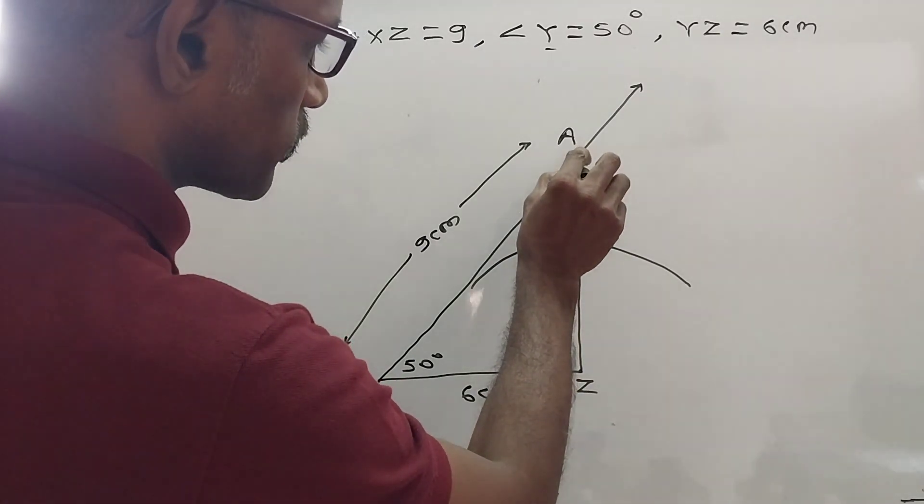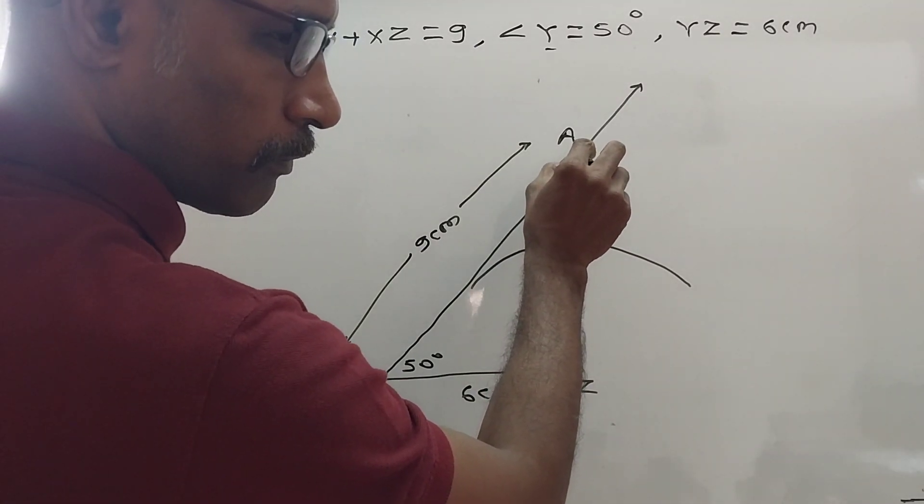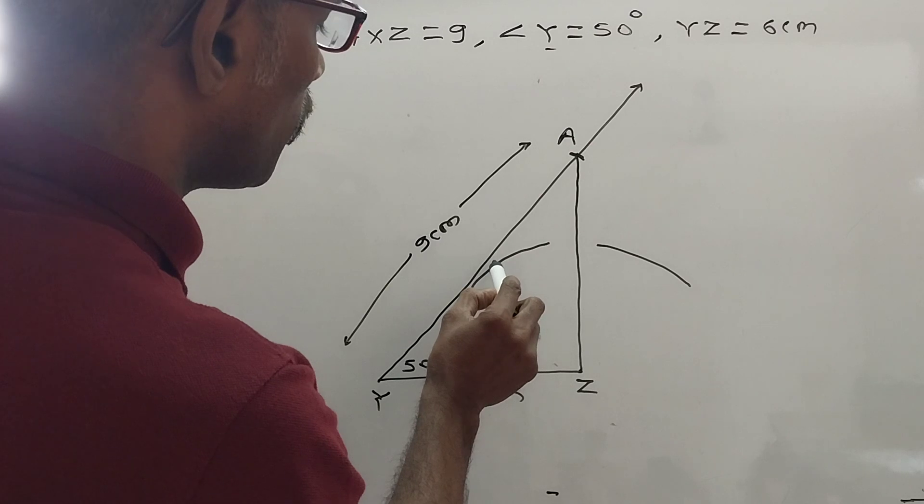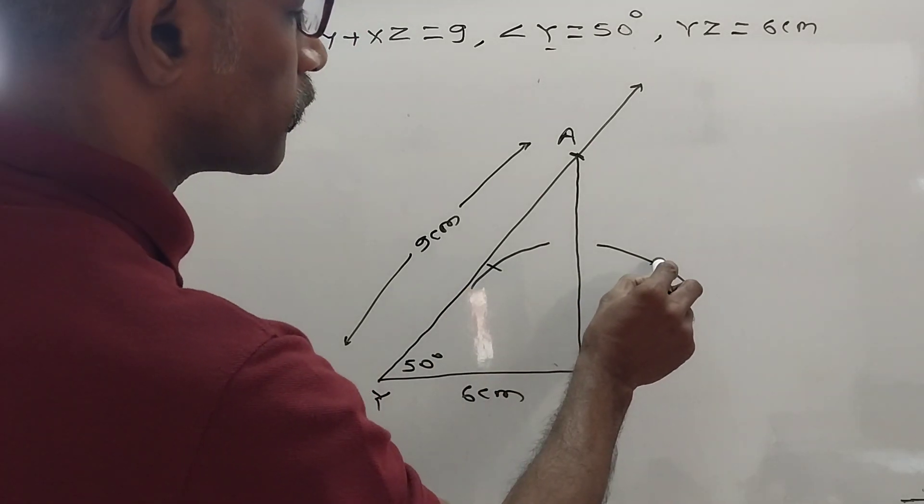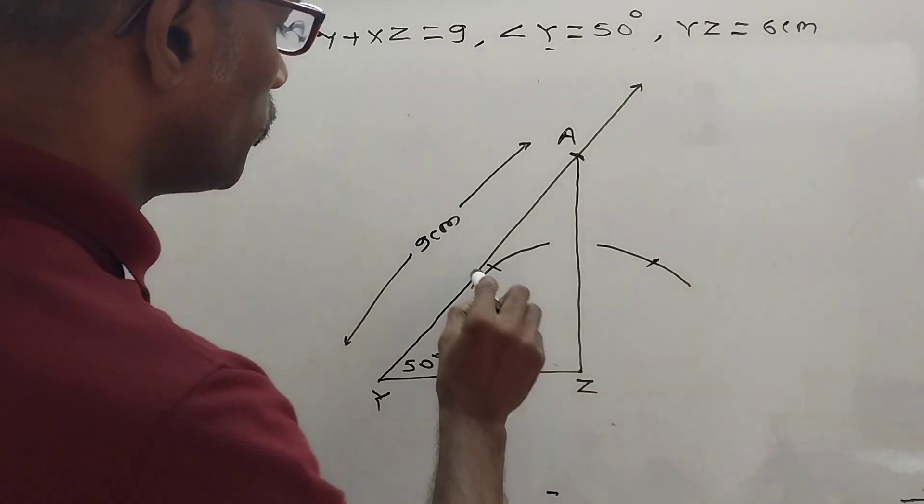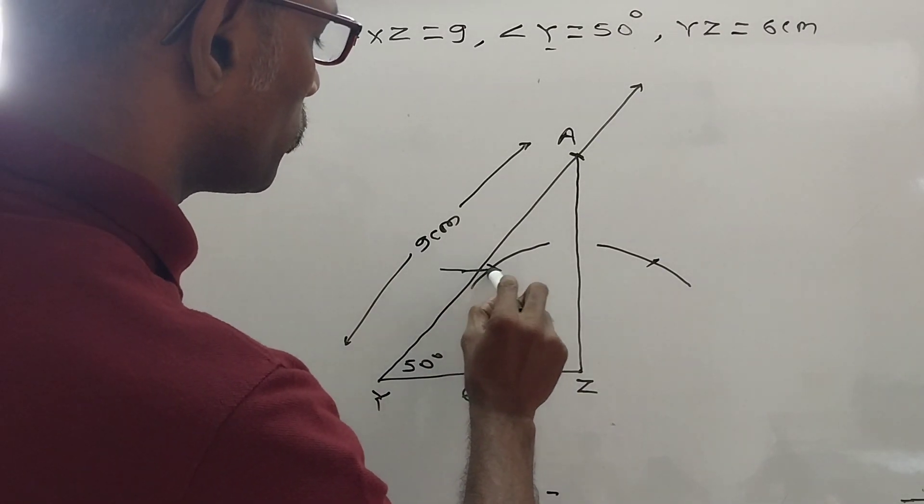Then keep that same point active on A and draw arcs, very small. Now we want intersection only. Then join these intersections.